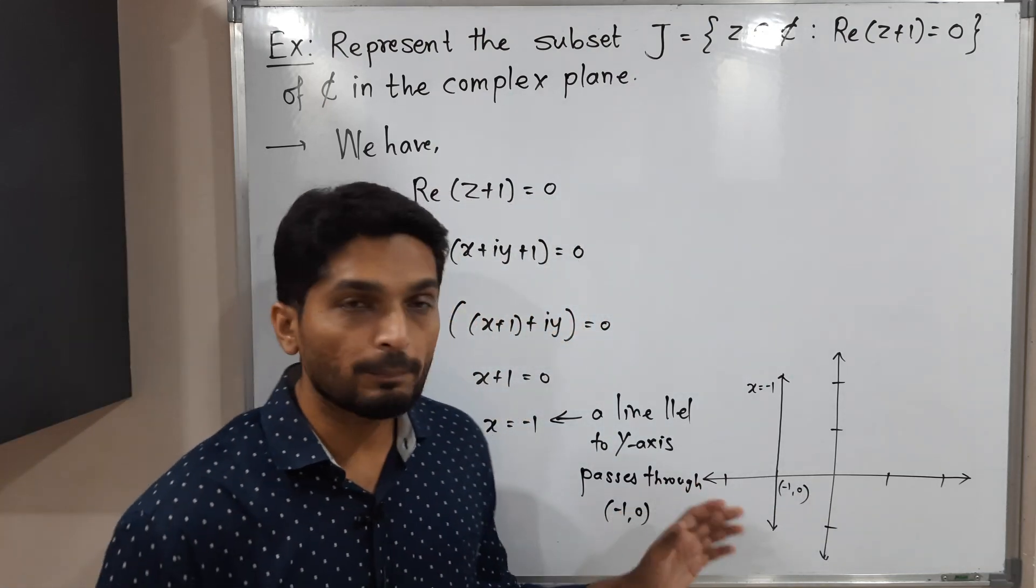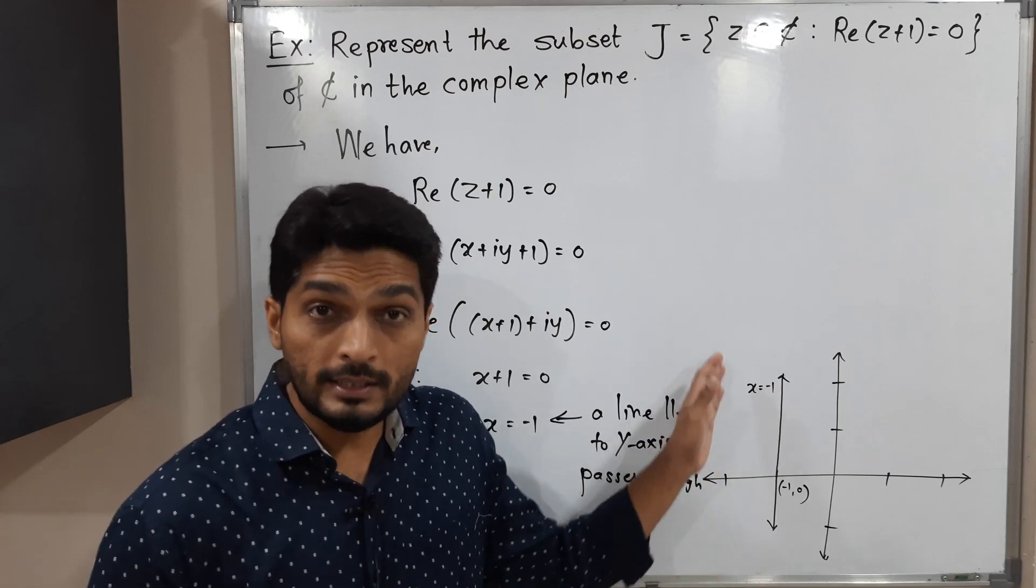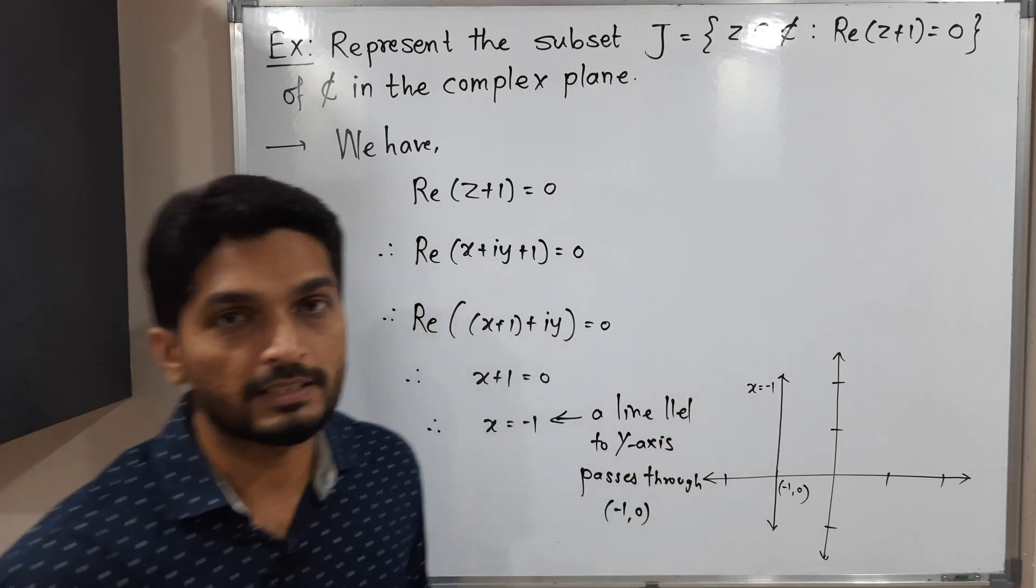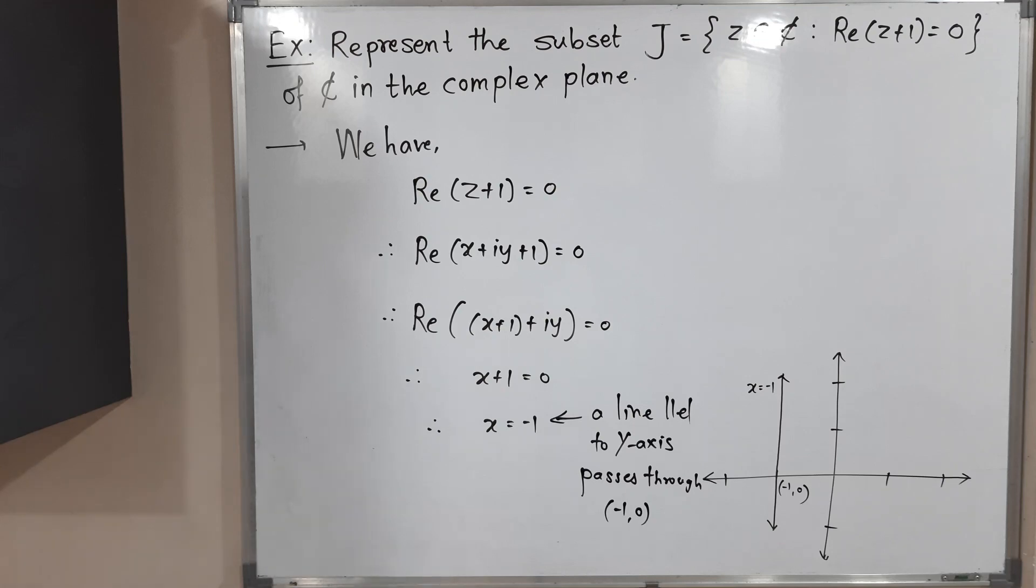The set of all complex numbers which lie on this line, that is nothing but our set Z. So in this way we completed this example, make a screenshot of it then we will stop. Thank you, see you.